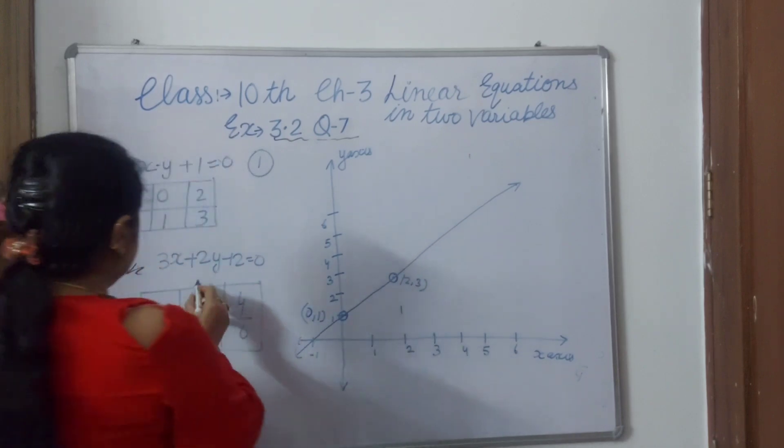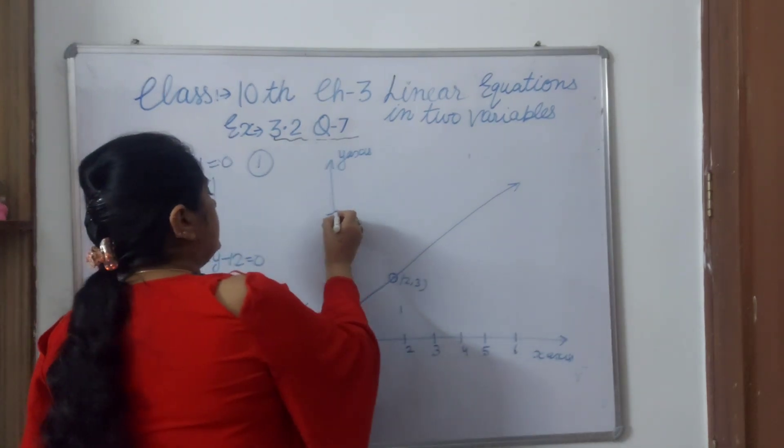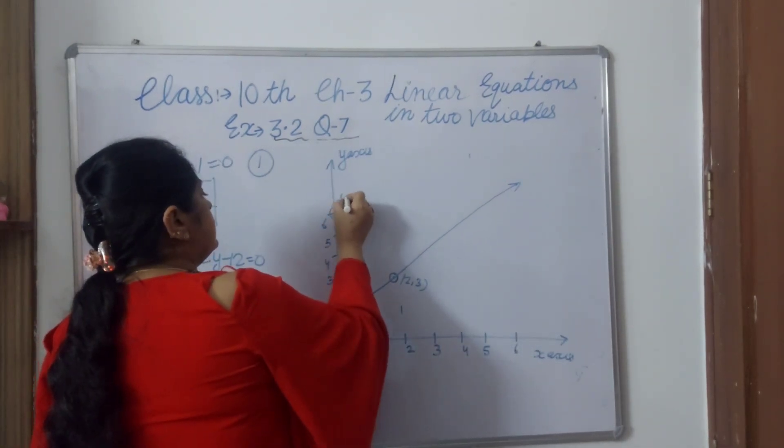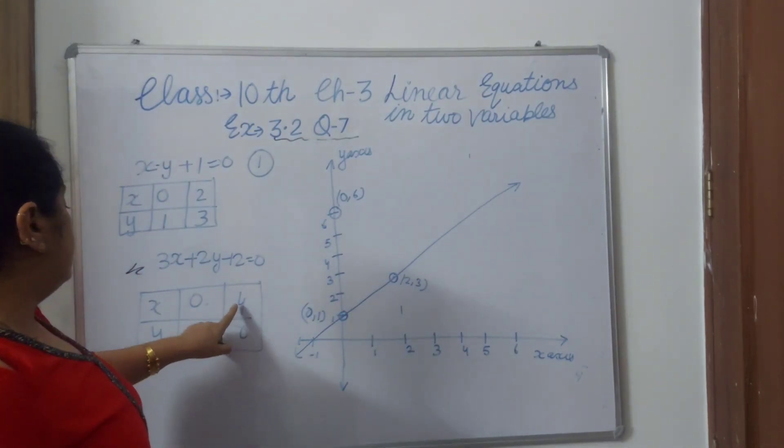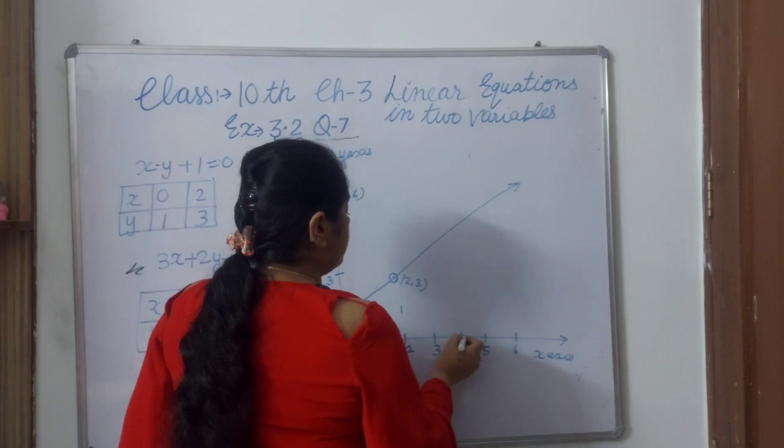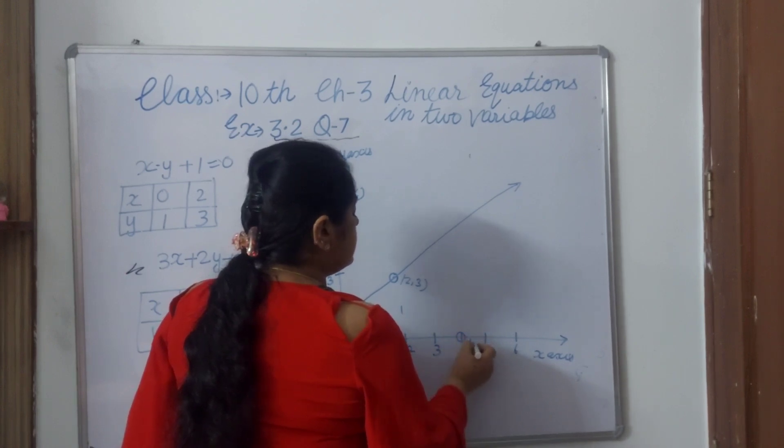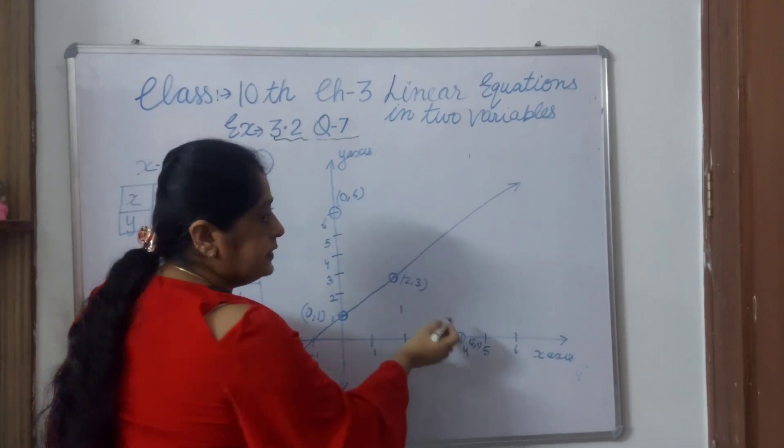Now for the second equation, x is 0 and y is 6. Here you get the point where x is 0 and y is 6. Second point: x is 4 and y is 0. On the x-axis, y is 0. This is the point. Now we will join this point and this point.